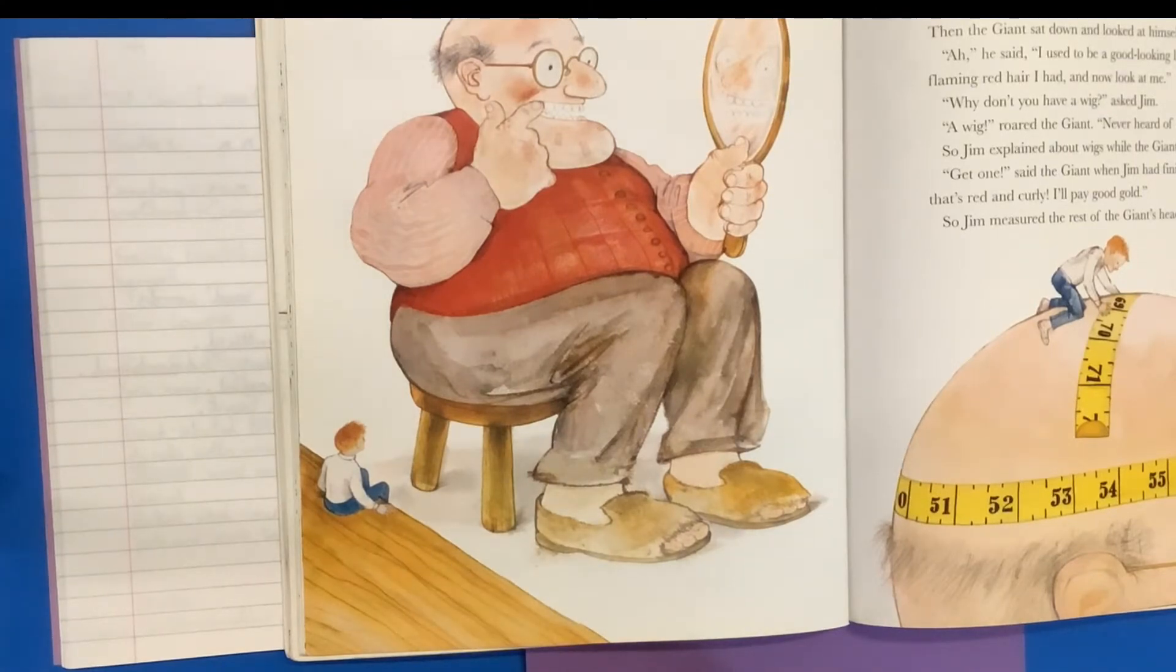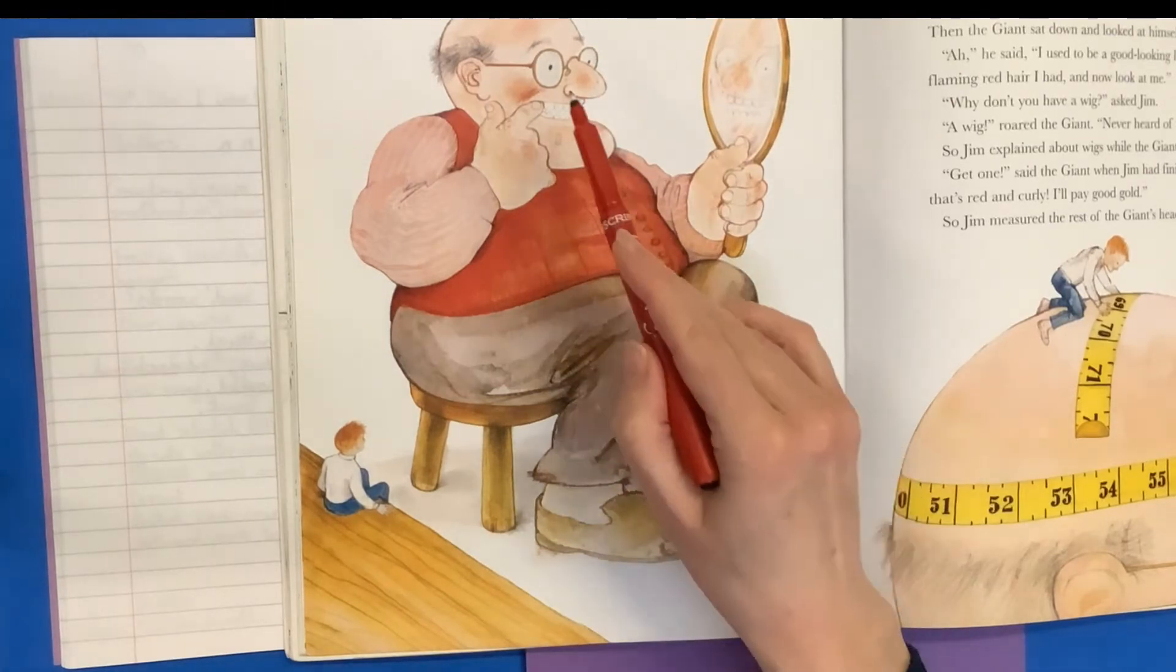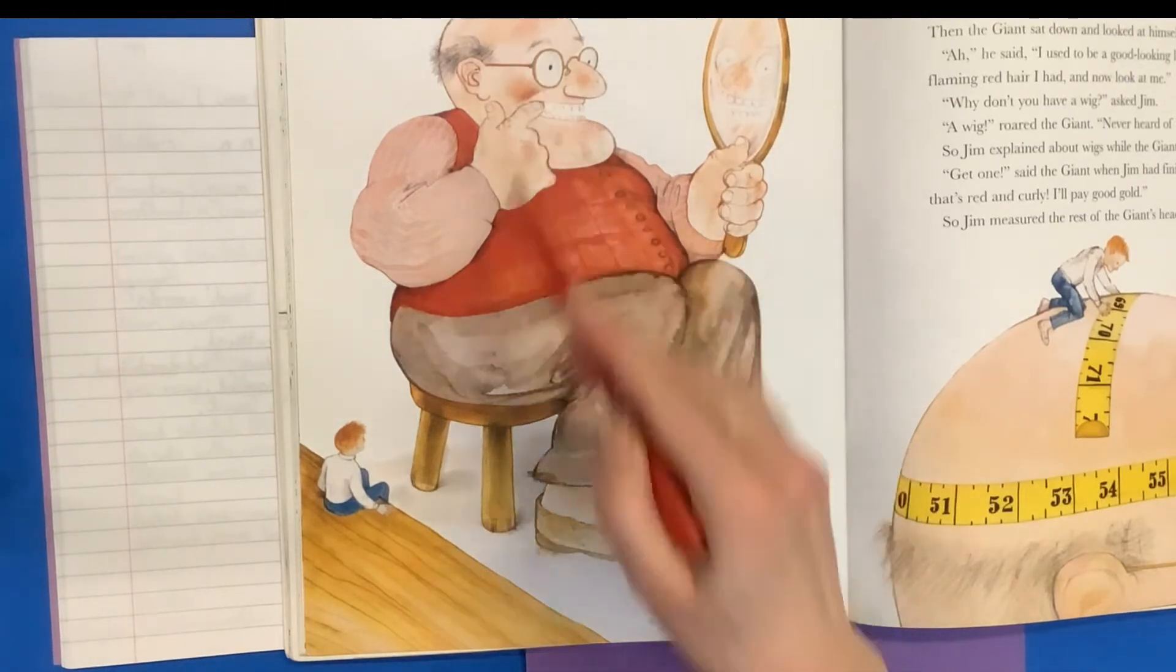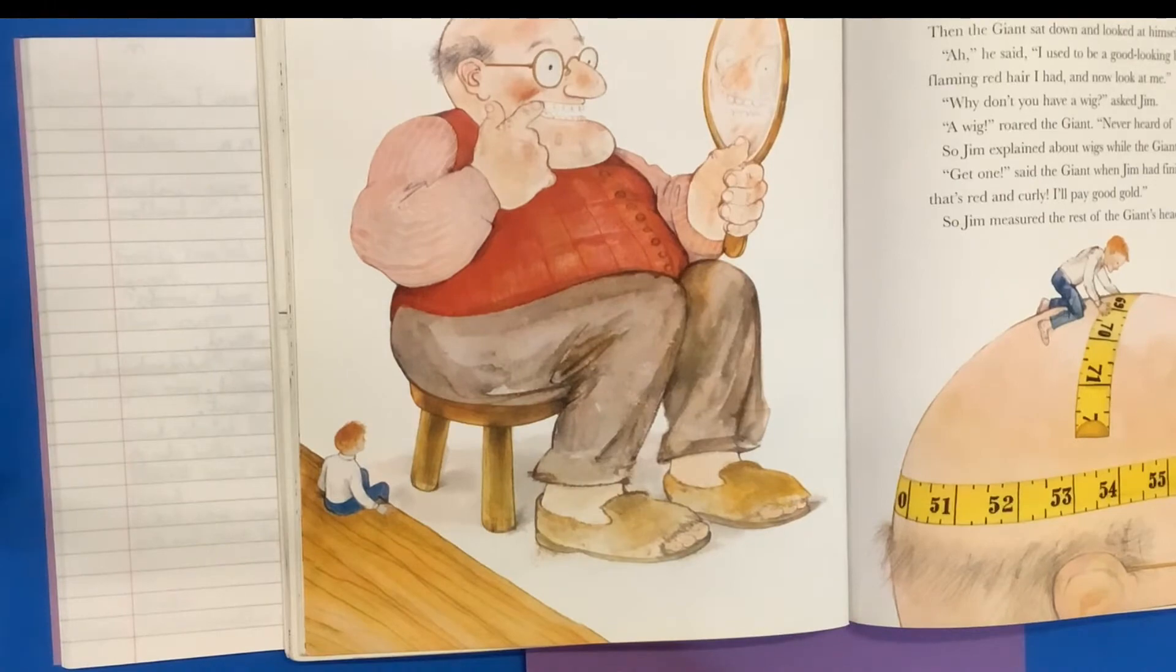Now to innovate the story, instead of using glasses, teeth and a wig as our ideas, we're going to think, what else might the giant want? And looking at what he's got, his slippers here in this picture look very threadbare.